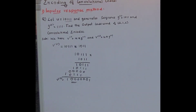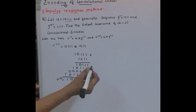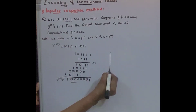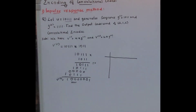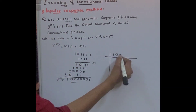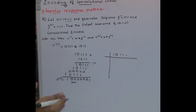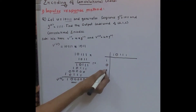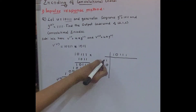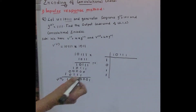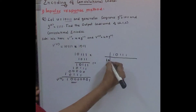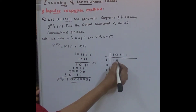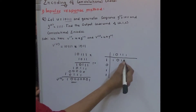Alternatively, we can find V1 using linear convolution. We write the message 10111 and G1 as 1011. By linear convolution, multiplying 1 into all G1 terms gives 1, 0, 1, 1. Then 0 into all terms gives 0, 0, 0, 0, 0.